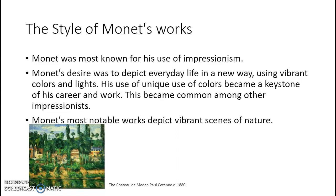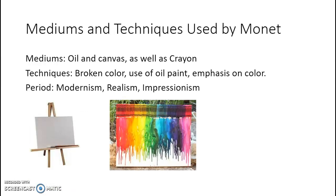Now I'm going to talk about some of the mediums and techniques that he used. Some of the mediums used by Claude Monet include oil and canvas, as well as crayons. He used techniques that include broken color in order to add more emphasis to the color he was so well-known for. He was also known for his use of quick brush strokes. Monet also used rich oil paints in order to capture the proper colors and light he desired. This use of color and light became the hallmark of Monet's career, as well as Impressionism as a whole.